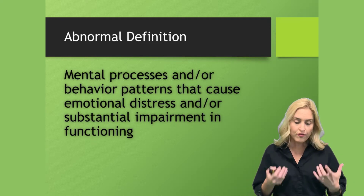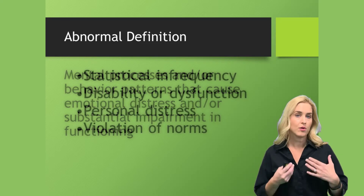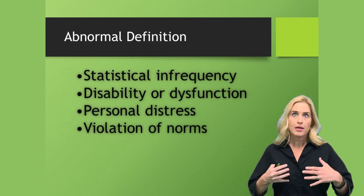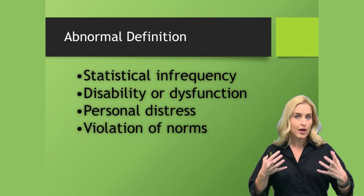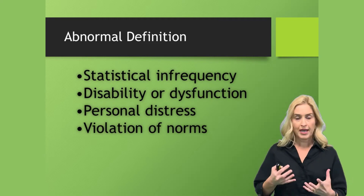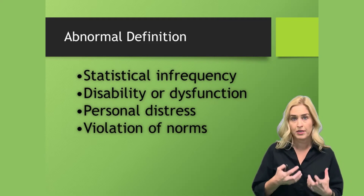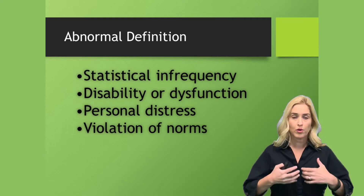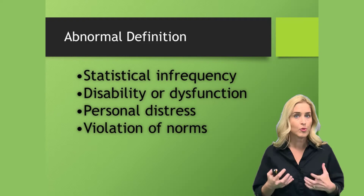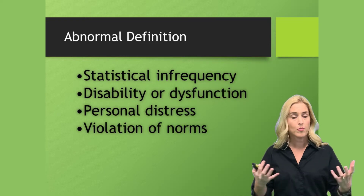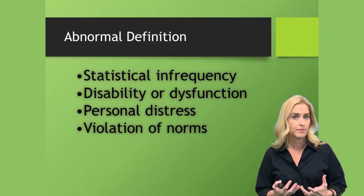We have four criteria that we use when figuring out if someone has substantial impairment in functioning, or if there's some kind of problem that this is causing for them or those around them.